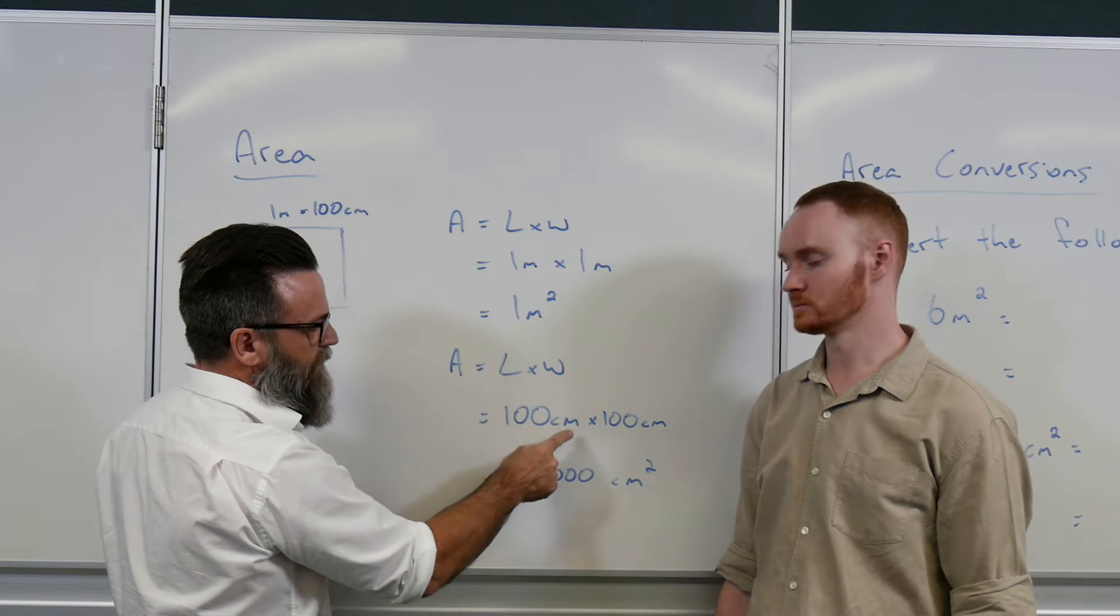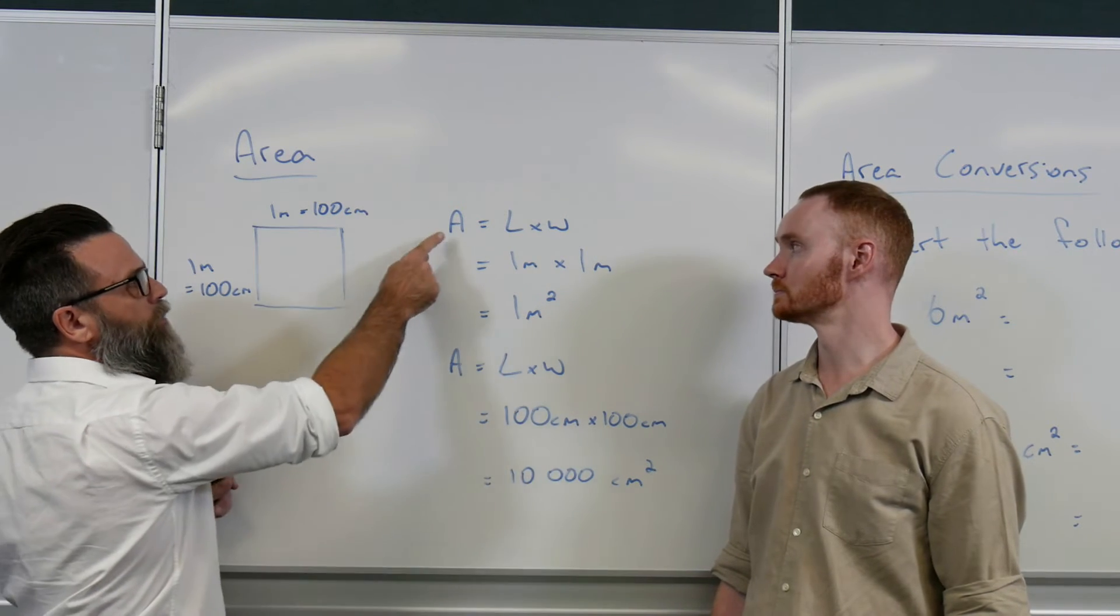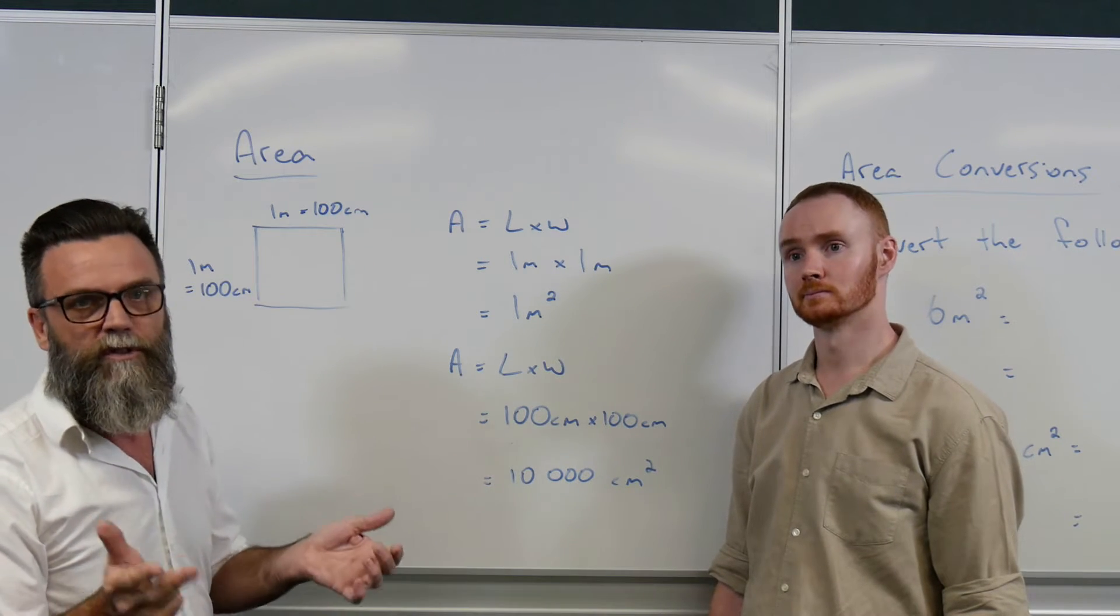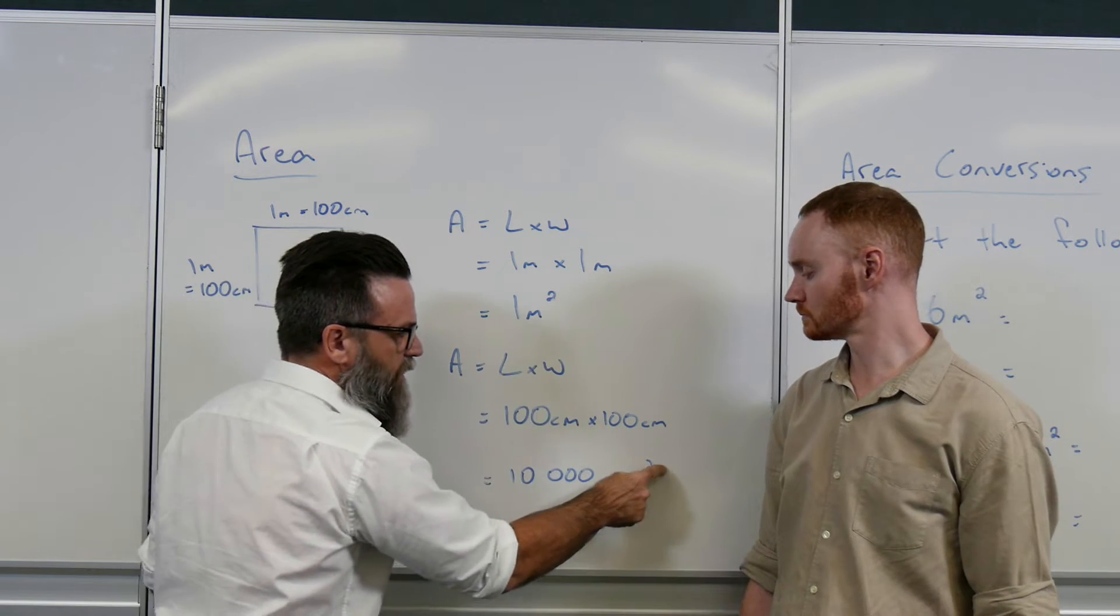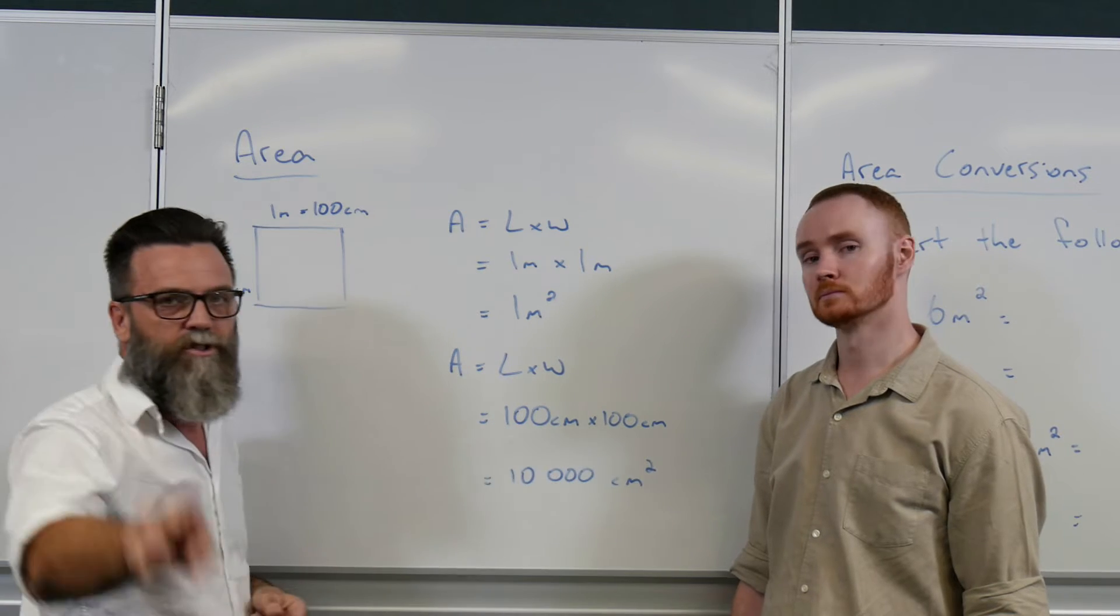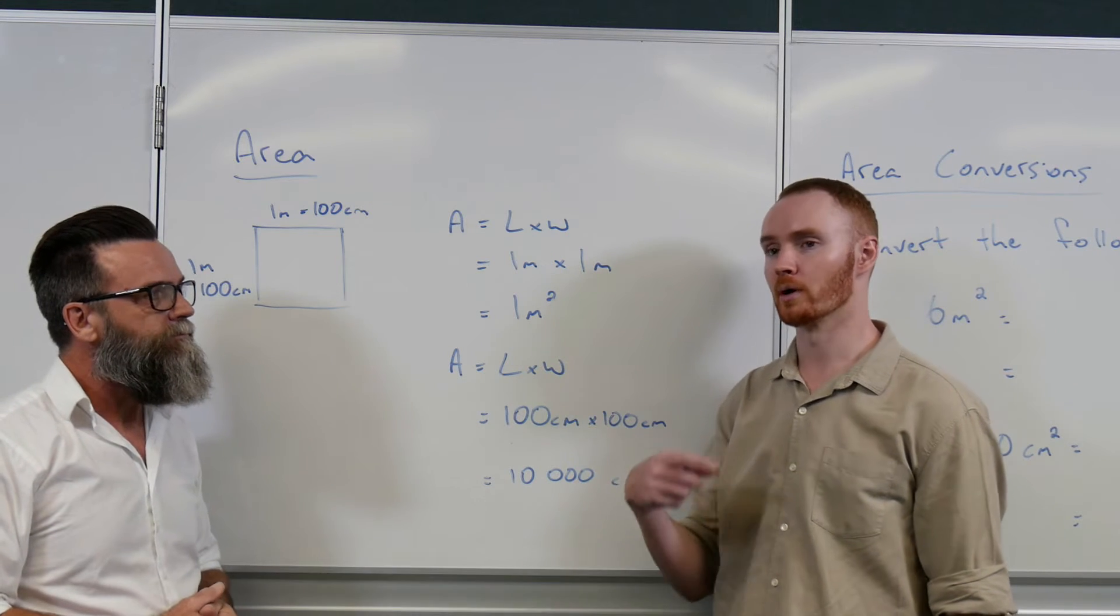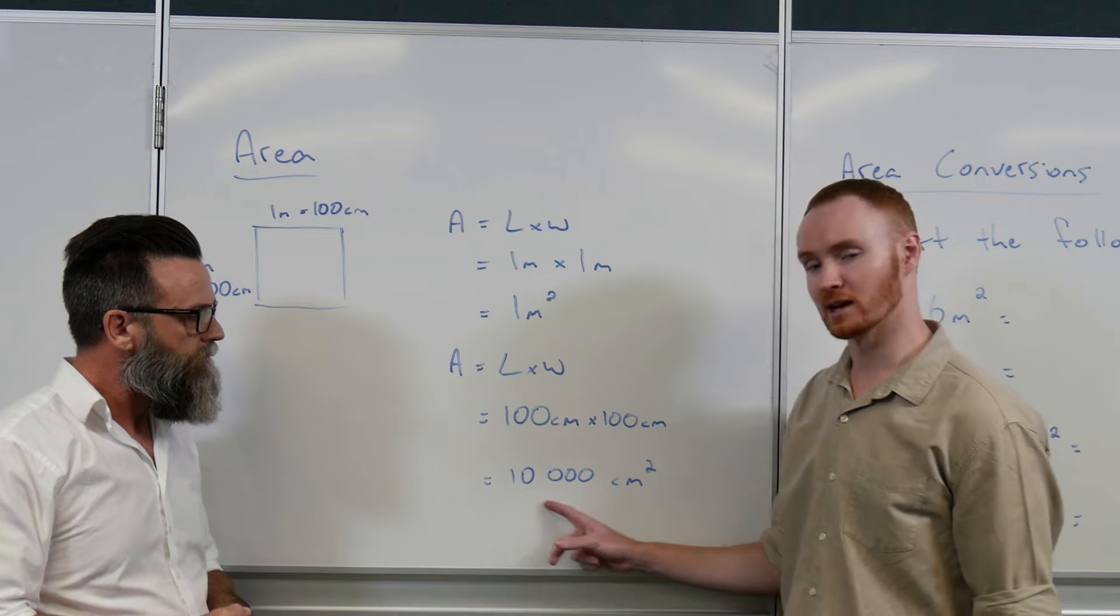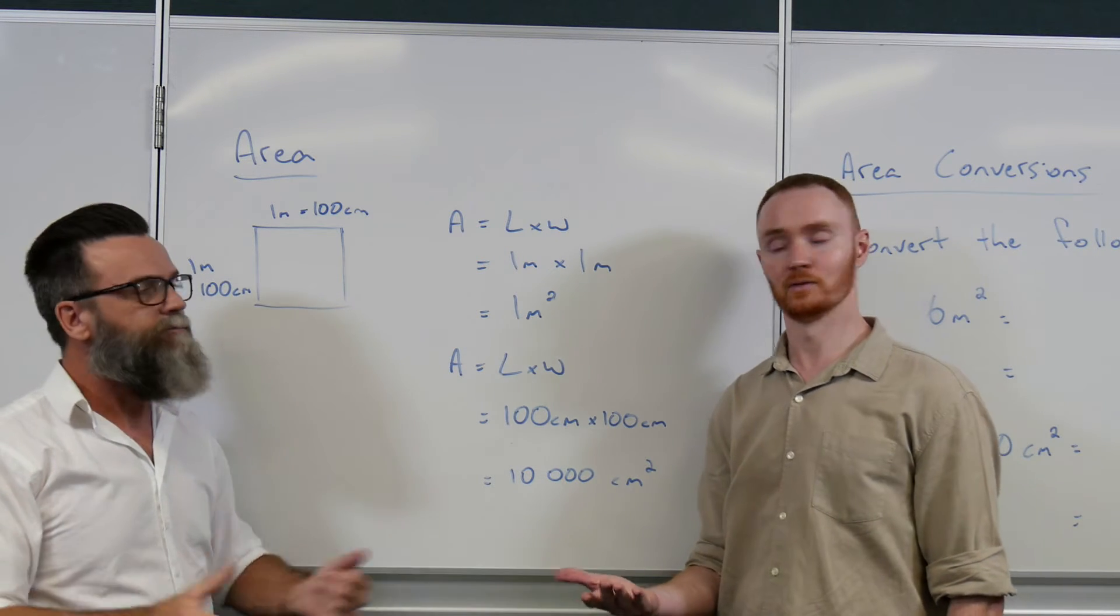Here's what the same equation looks like when we multiply. And you'll notice, we have to multiply 100 times 100 to get the same area. Now 100 times 100 happens to be 10,000. Now we're talking centimeters because of times centimeters by centimeters, there's a little squared up the top. Conversion wise, that means in one meter squared, there is actually 10,000 centimeters squared.